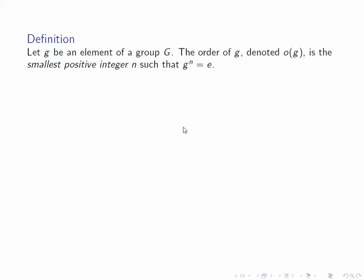Given we've defined an exponent, we can define the order of an element of a group to be the smallest positive integer n such that g to the n is equal to the identity. Of course, that doesn't have to exist. If no such n exists, we say that g has infinite order and sometimes write o(g) equals infinity.